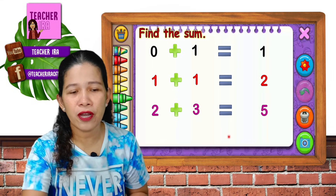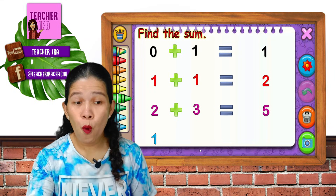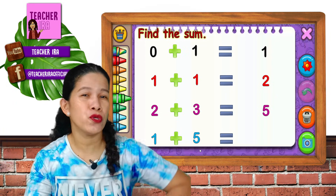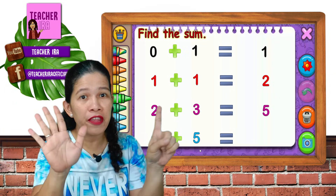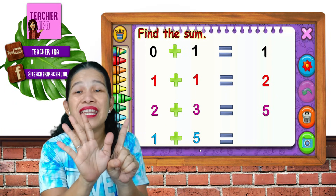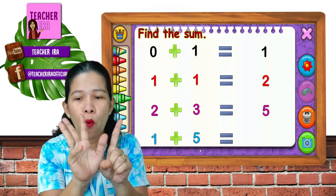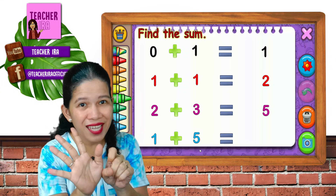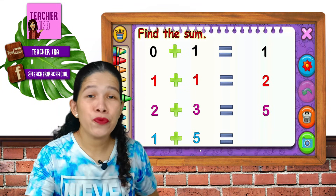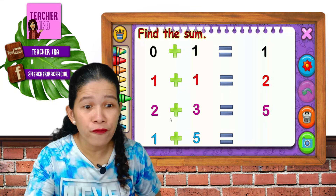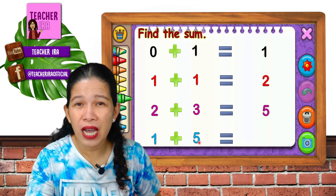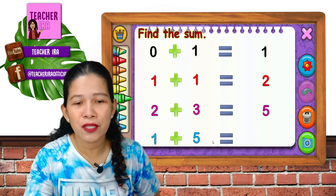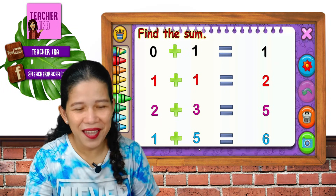Now let's have one plus five equals. You have one and then five — put them together and count: one, two, three, four, five, six. Or count on from five — what's next? Five, six. Because you will just add one. So the answer is six.